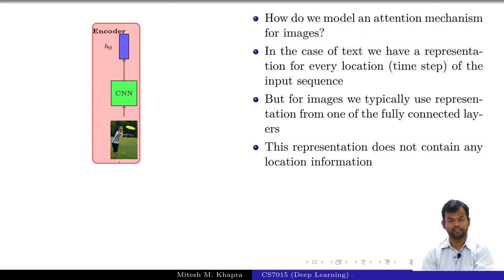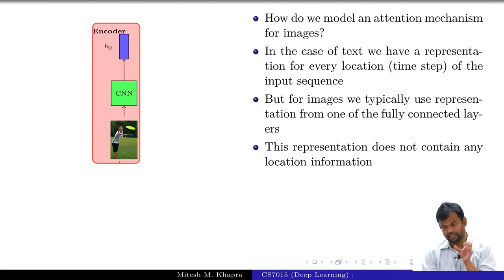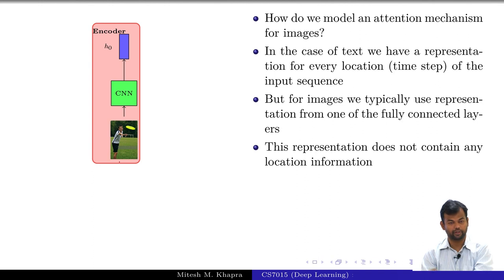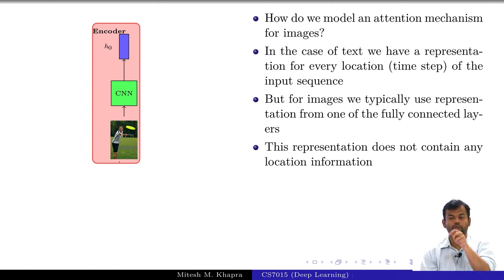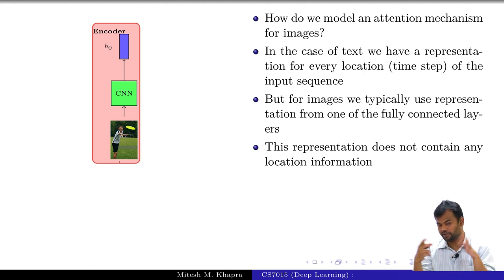But the representation we use — say the FC7 representation — does not contain any location information; it is just a flattened vector. So how do we get attention on locations? The problem is clear: the FC7 representation is just a flat fully connected vector and does not have any location-based encoding. If the fully connected vector is of size 512, I cannot say that the first 24 dimensions correspond to this set of pixels and the next 24 to the next set of pixels. The dimensions of the FC7 vector do not have any spatial semantics.